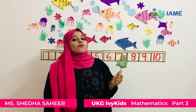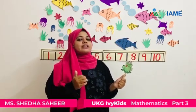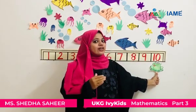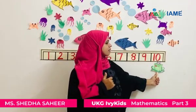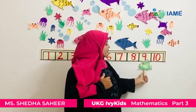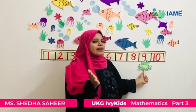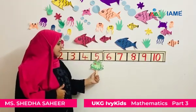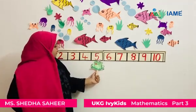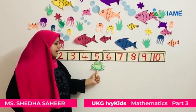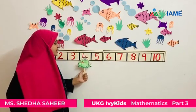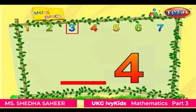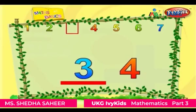The froggy is here to help us find what number comes before. So now let's see which number the froggy is going to sit on. Froggy is on number ten. Froggy, tell me which is the number that comes before ten? It's number nine. Right answer! Now froggy is on number five. So froggy, what comes before five? It's number four. So the number that comes before five is four. Right?